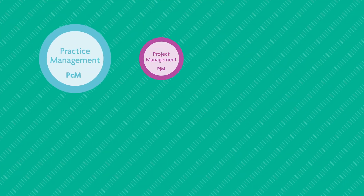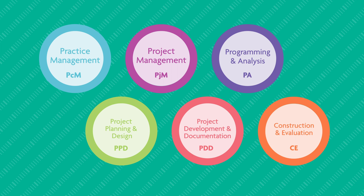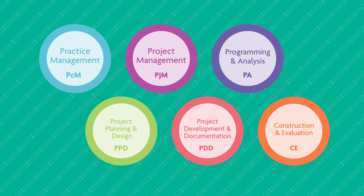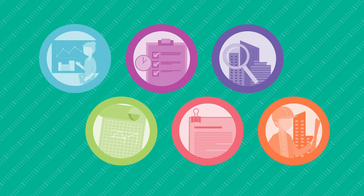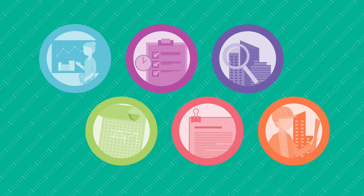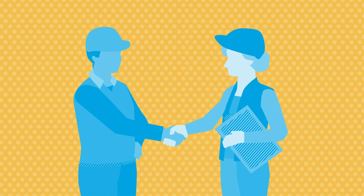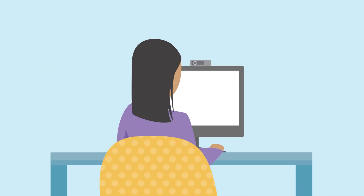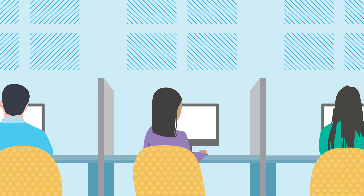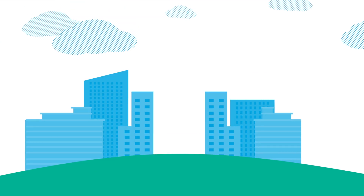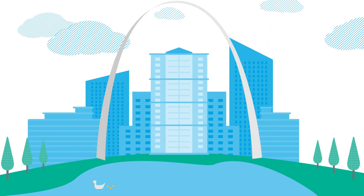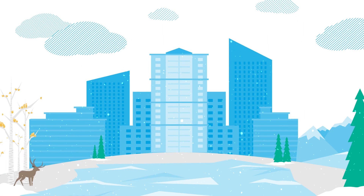The A.R.E. features six divisions that mirror the typical phases of an architecture project. The test also aligns with the A.X.P. and assesses aspects of an architect's responsibility within a firm, including managing projects and coordinating with other professionals. For flexibility, the exam is administered both online and in person with hundreds of test centers around the country and internationally, and the divisions can be taken in any order.